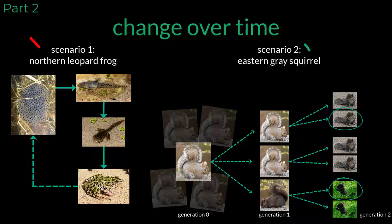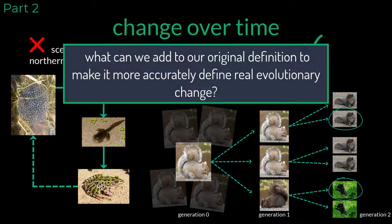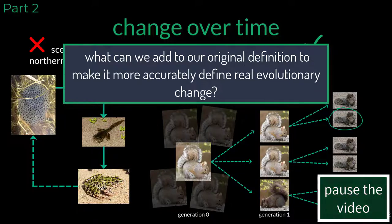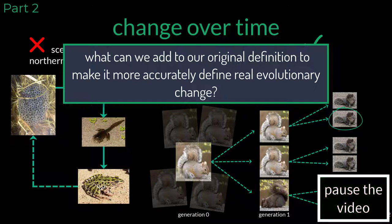Now that we know scenario 1 does not show true evolutionary change occurring, let's use our new understanding to create a more accurate definition for evolution. Considering the key differences identified between the individual frog and the squirrel population, what can we add to our original definition to make it more accurately define evolutionary change? Pause the video and take a moment to create and record your new definition for evolution. Share your updated definition with your instructor and resume when ready.